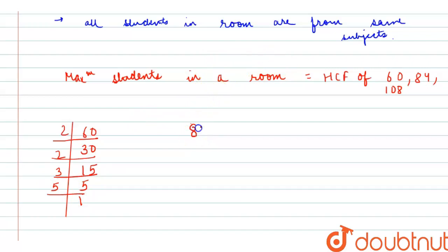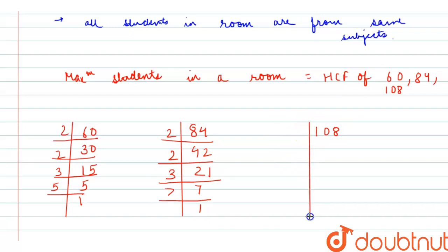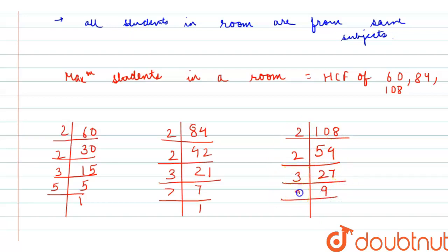For 84: since it's also an even number, 2 × 42, 2 × 21, 3 × 7 — giving factors 2 × 2 × 3 × 7. For 108: also even, 2 × 54, 2 × 27, 3 × 9, 3 × 3 — giving factors 2 × 2 × 3 × 3 × 3.